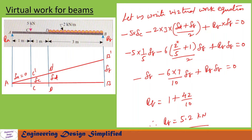Substituting the values of delta C, delta D, and delta B from the previous expressions and simplifying, we get the reaction at B: RB = 5.2 kN.